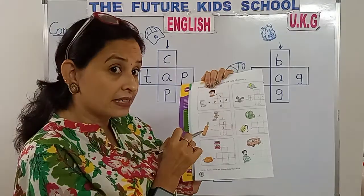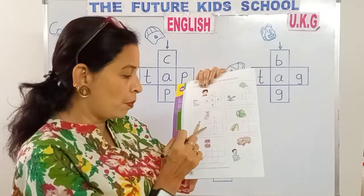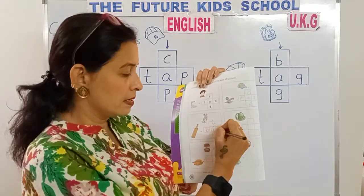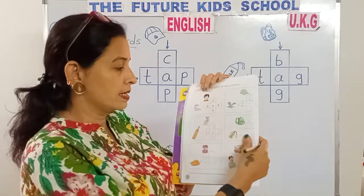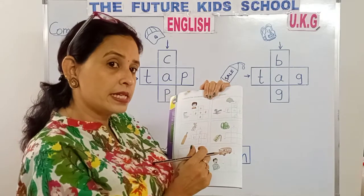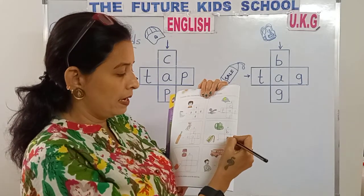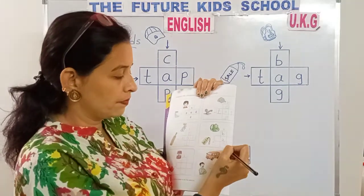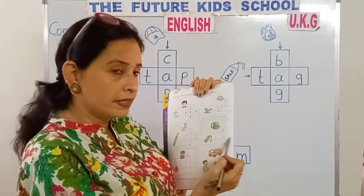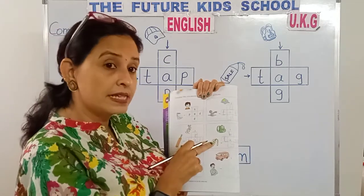This is a picture of a bat. B-A-T spells bat. See the arrow pointing this side. B-A-T. Bat. Look at this picture — this is a bag. B-A-G. Let's write it: B-A-G. Bag. Look at this picture — this is a tag. See the arrow pointing this side. T-A-G spells tag.